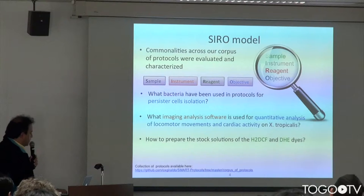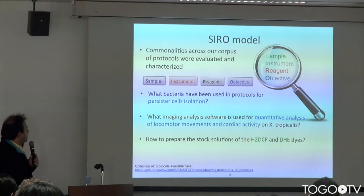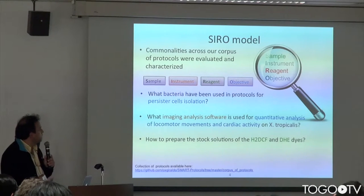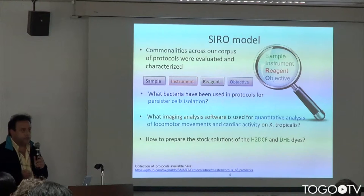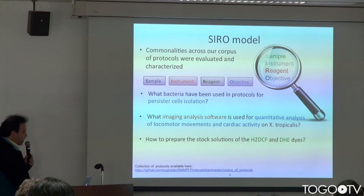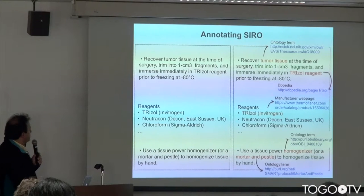However, we also saw that the value in being able to frame the question using this kind of minimum information model was very important. Because we could answer things like: what bacteria have been used in protocols for persister cell isolation? And these are the kind of real queries that people in labs want to ask when searching for experimental protocols.